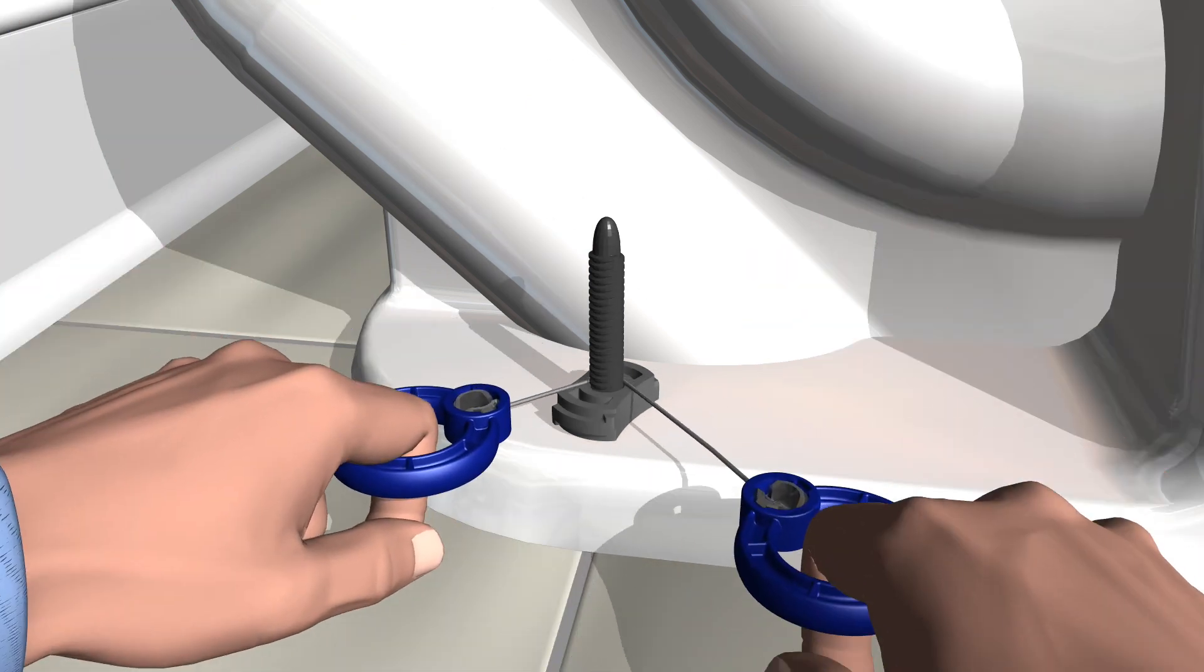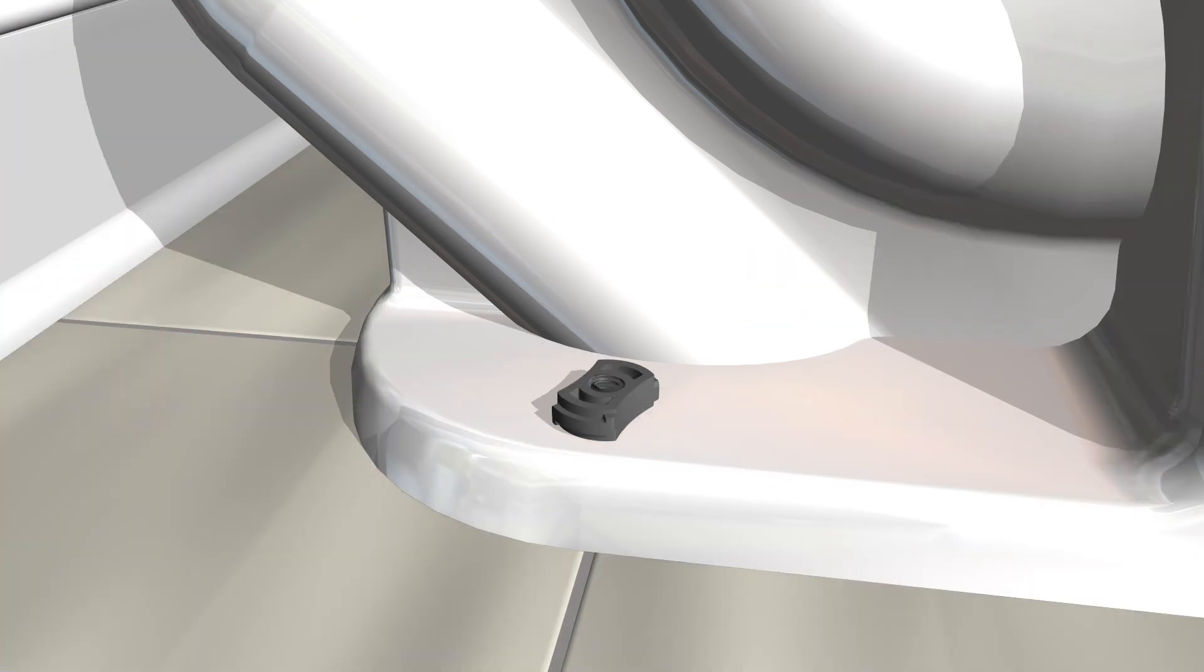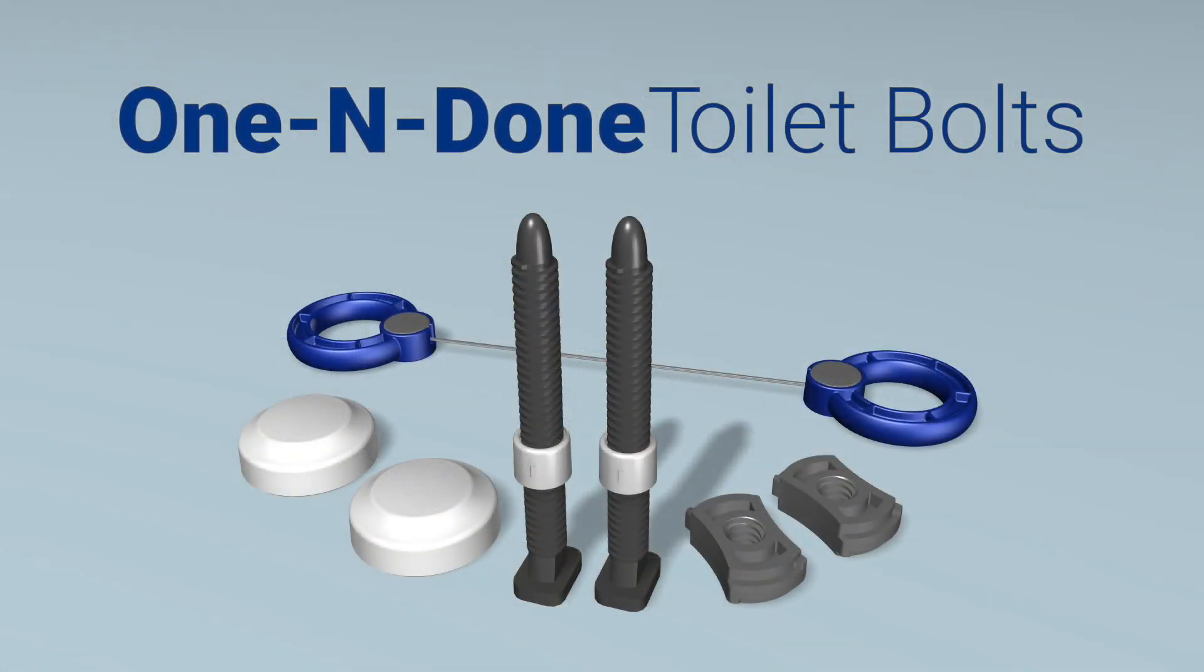Use the diamond saw to quickly cut the bolt at the top of the nut. Finally, add the decorative cap and secure it with a quarter turn. The 1N Dunn toilet bolts are the perfect solution.